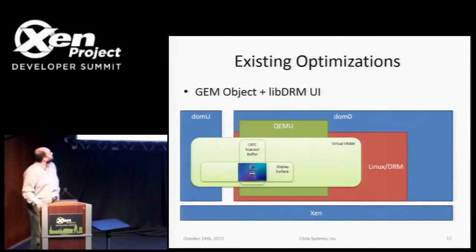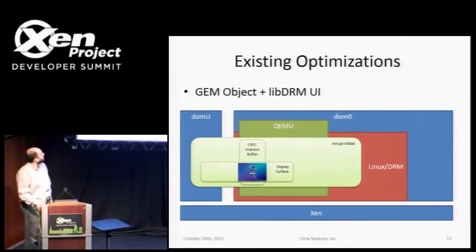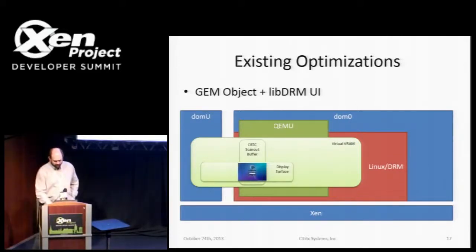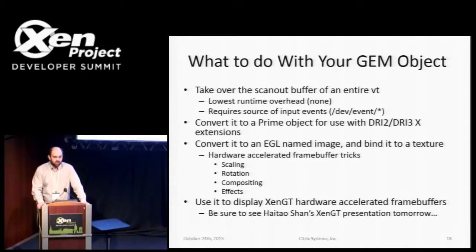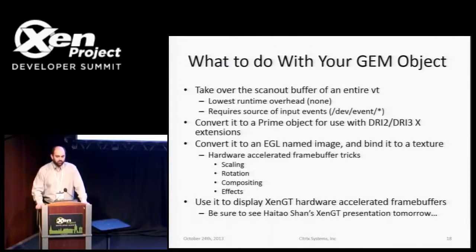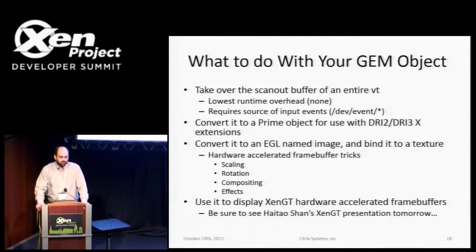Now all of your buffers are the same pages, so nobody has to copy anything anywhere. You now have a GEM object representing your guest frame buffer, and there are a few things you can do with it. You can use KMS and turn it into a scanout buffer — you get an entire VT in your Dom0 Linux with no overhead whatsoever. Your screen is updating and CPU usage is zero; all the copies are being done in hardware. You don't get guest events from X, so you need another source for user input — but you can get them from /dev/event.